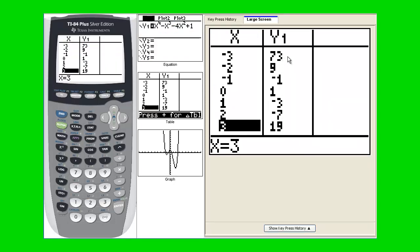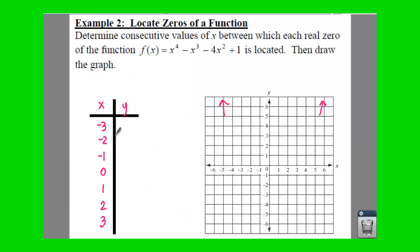Notice there's going to be some sign changes. There is not one here. There is one here. Is one here. Is one here. Is one here. Let's see how many zeros we get.